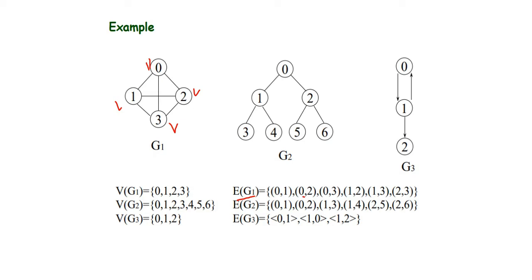The edge set E(G1) consists of the lines connecting the vertices. For example, from vertex 0 to vertex 2 you have a line, so you have the pair (0, 2). If there were labeled edges like e1 or values like 10, you would write them as sets. Since there are no such declarations, you simply list all pairs: (0,1), (0,2), (1,2), (1,3), (2,3), and so on.